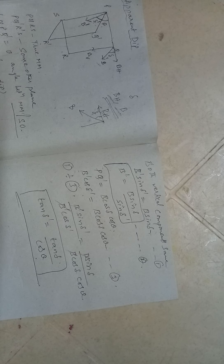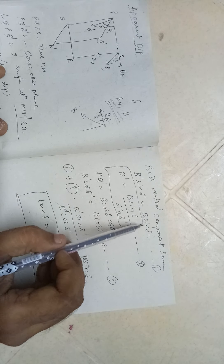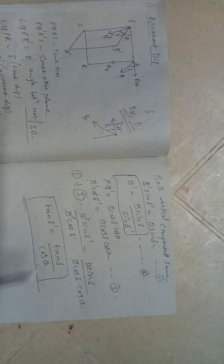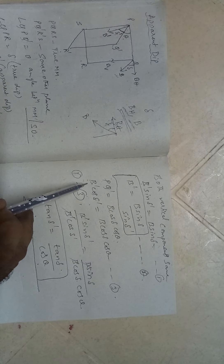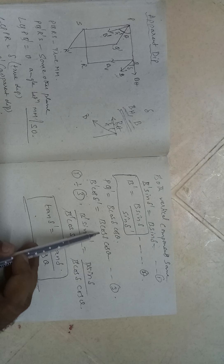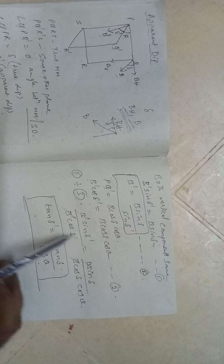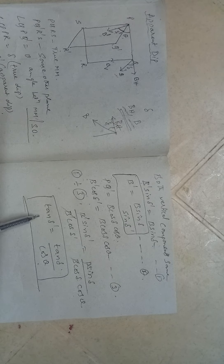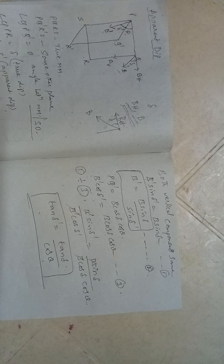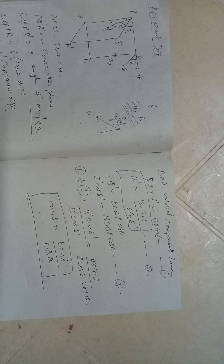Now let's write all these equations together. Since PS is the same in both cases, the vertical components are equal: B' sin delta dash = B sin delta — this is equation one. And PQ dash = B cos delta cos theta, but PQ dash also equals B' cos delta dash — this is equation three. Dividing equation one by equation three, B' cancels out, giving sin delta dash / cos delta dash = sin delta / (cos delta × cos theta). Rearranging, we get tan delta dash = tan delta / cos theta.